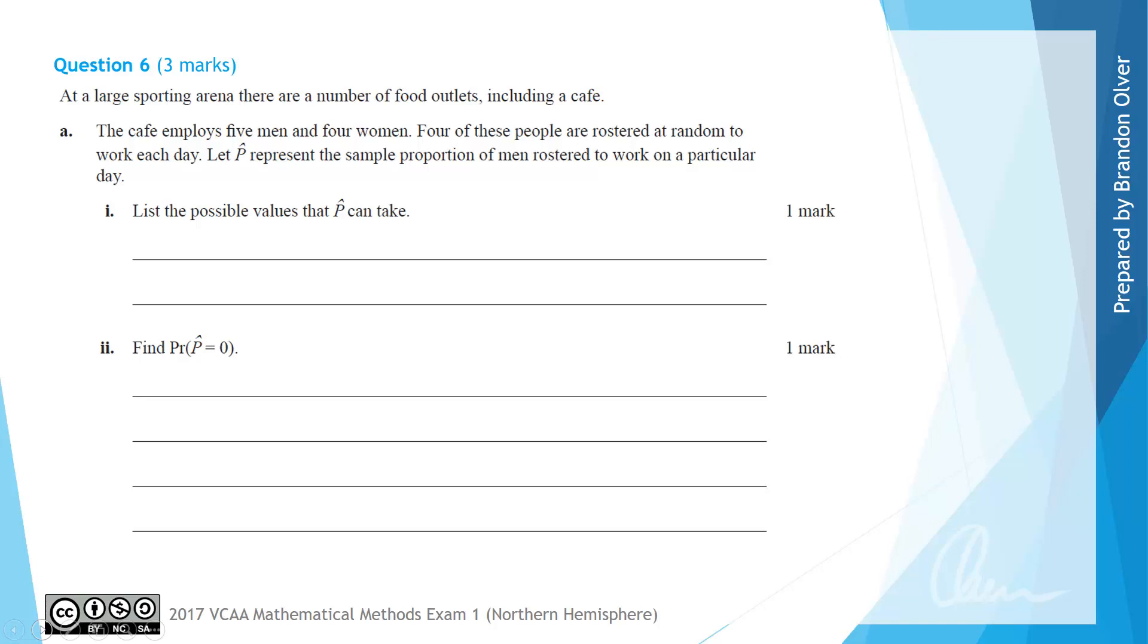For question 6, at a large sporting arena there are a number of food outlets including a cafe. The cafe employs five men and four women. Four of these people are rostered on at random to work each day, and we're going to let capital P-hat represent the sample proportion of men rostered to work on a particular day.